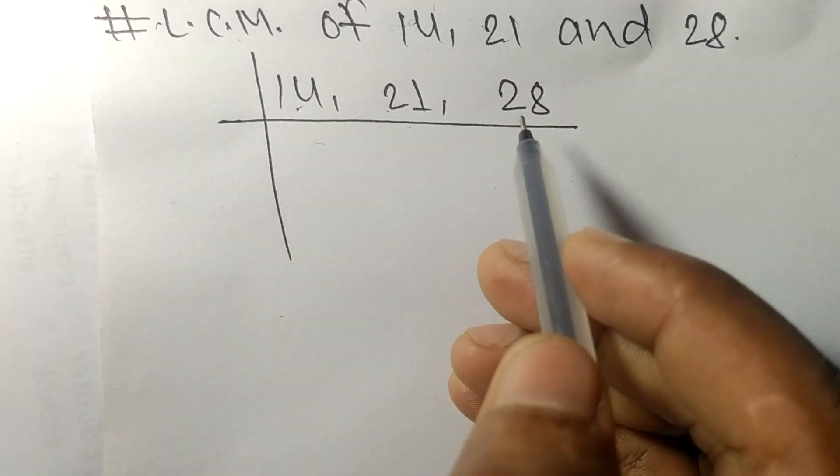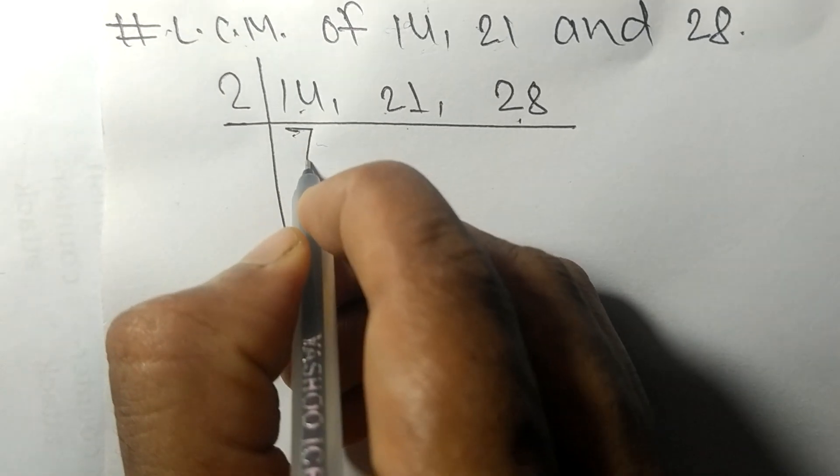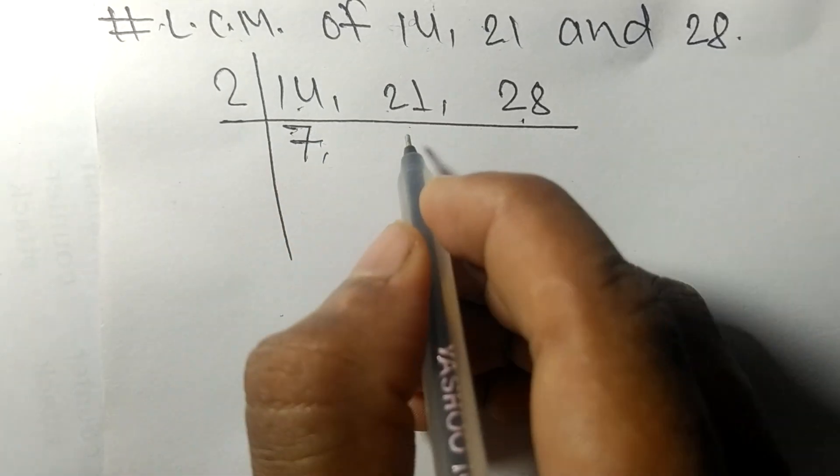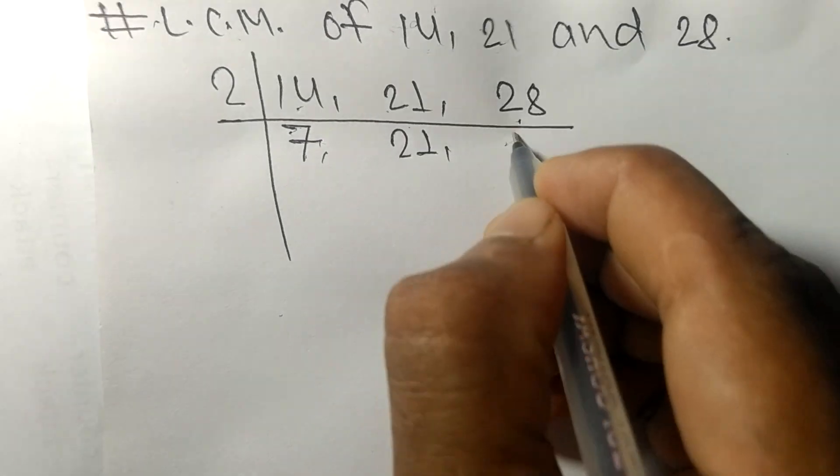2 times 7 equals 14. 21 is not divisible, so it stays the same. 2 times 14 equals 28.